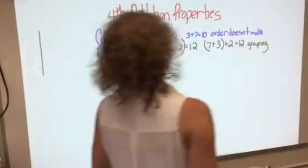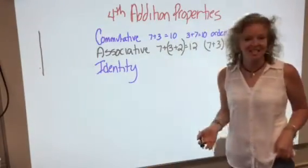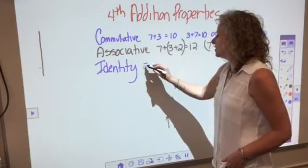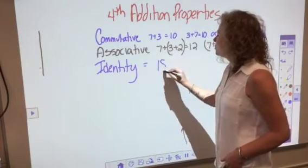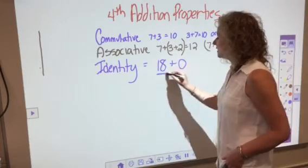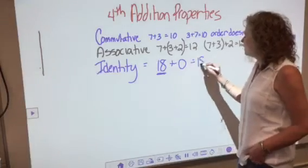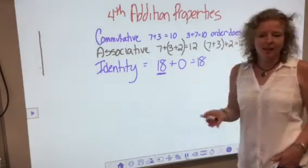We've also talked about the identity property of addition. The identity property of addition says a number will keep its identity - it stays the same when you add the number 0 to it. So 18 plus 0 equals 18. 18 is still 18 when you add 0 to it; it keeps its identity.